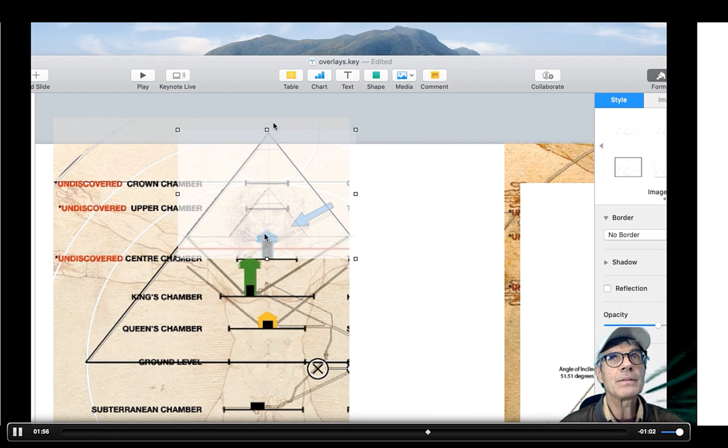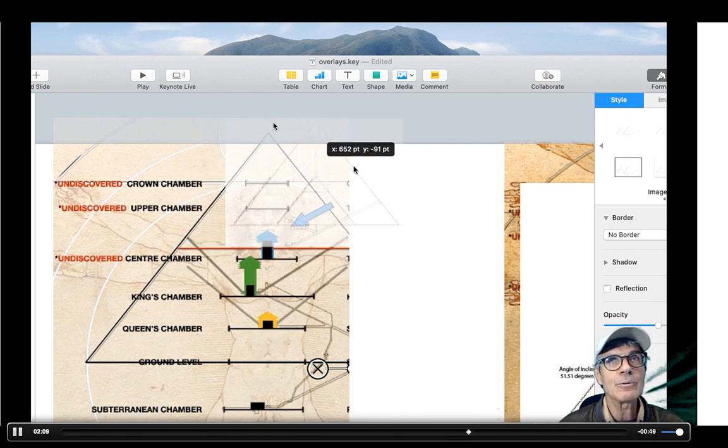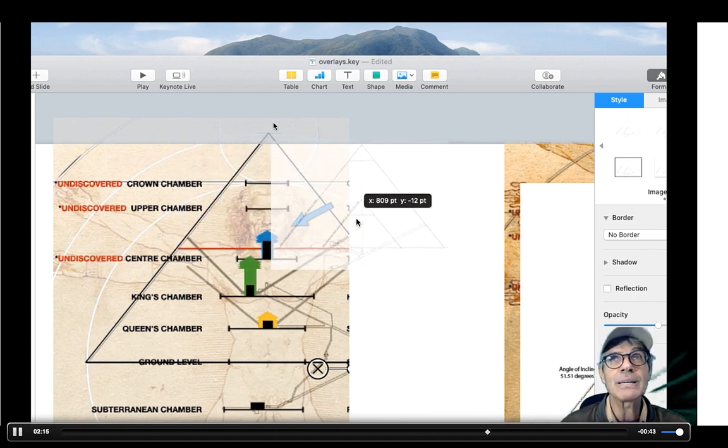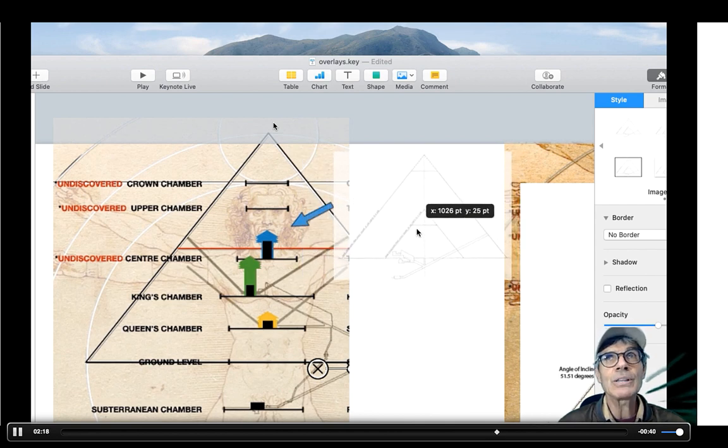So if we put our Hemiunu template over that, there will be the tip of this undiscovered chamber, but it's right in the middle line there, would be in there, and then if there's upper undiscovered chambers up there, they would also be in this Hemiunu template.